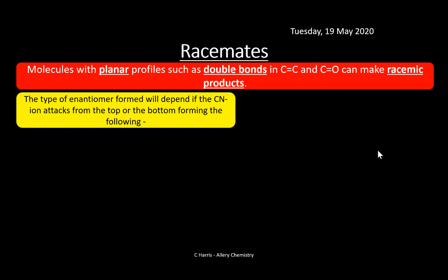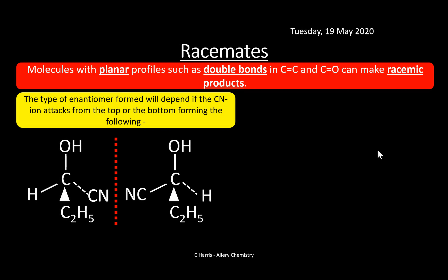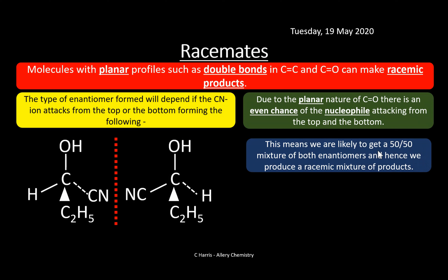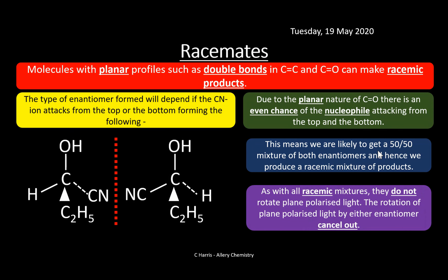The type of enantiomer formed depends on whether the cyanide ion attacks from the top or the bottom. As you can see, both attacks give two different enantiomers — mirror images — confirming there is a chiral carbon. Due to the planar nature of the carbonyl group, there is an even chance of the nucleophile attacking from either side, so we produce a racemic mixture — a 50:50 mix of each enantiomer. As with all racemic mixtures, it does not rotate plane polarized light because the rotations cancel out.